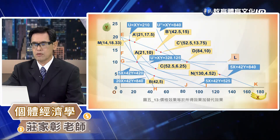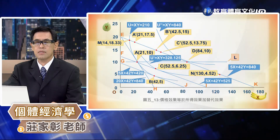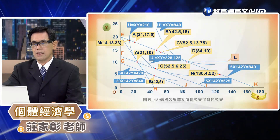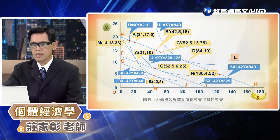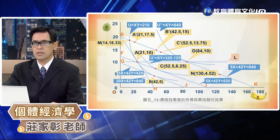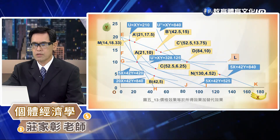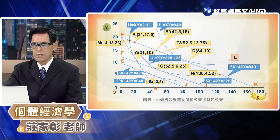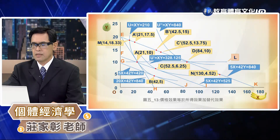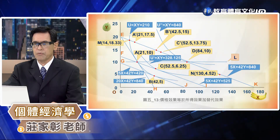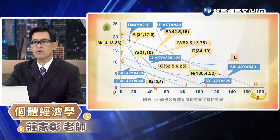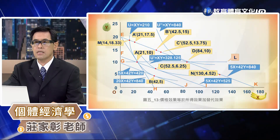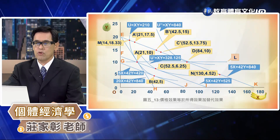我們把各均衡消費組合點連起來，把價格消費線定義出來。譬如說 AL 線是一條水平線，代表當香蕉的價格下降的時候，香蕉的消費數量從21單位增加到84單位，但是巴勒的消費數量並沒有改變，都維持在10單位，這表示香蕉跟巴勒的交叉彈性等於0，香蕉的價格改變並不會影響到巴勒的消費數量。在新的預算限制線 EK 上面有不同的消費點，代表不同的經濟意涵；如果從 A 點變成 A' 點，代表香蕉不受價格改變影響消費數量，但巴勒會增加消費數量；如果是變成到 M 點，就代表香蕉是一個劣等商品，價格下降但消費數量減少，這是違反需求法則的現象。